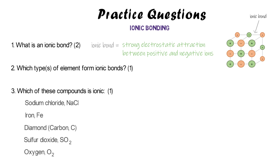The types of elements that form ionic bonds are metals and non-metals — you can only get an ionic bond forming if you have a metal and a non-metal reacting together. Of those compounds and elements, sodium chloride is the only one that has both a metal and a non-metal present — sodium and chlorine — so that must be the only one that's ionic.